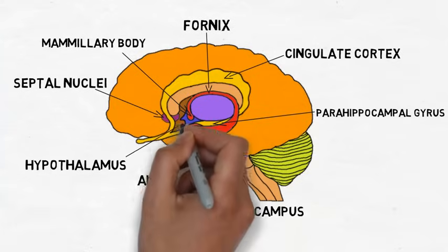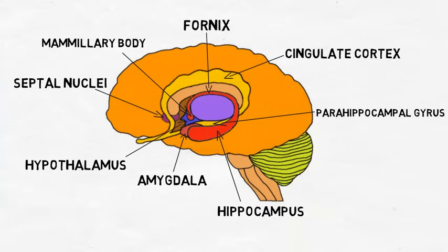The hypothalamus controls hormone release via the anterior pituitary and can exert widespread influence over bodily states to maintain homeostasis. While there are other structures that may be included in the limbic system, the structures identified here are some that are commonly considered part of it.